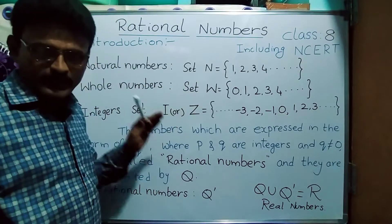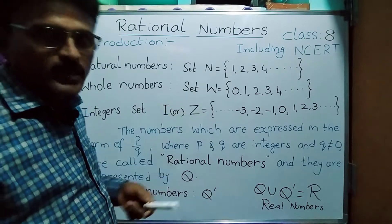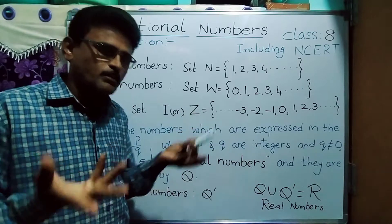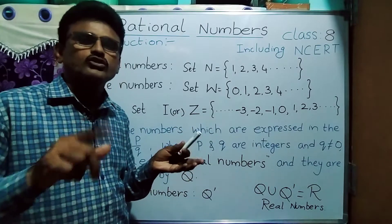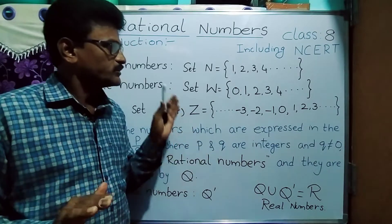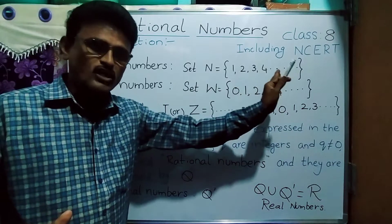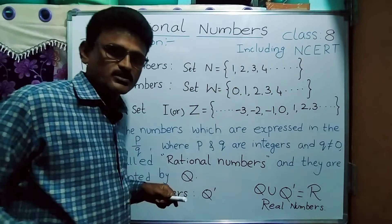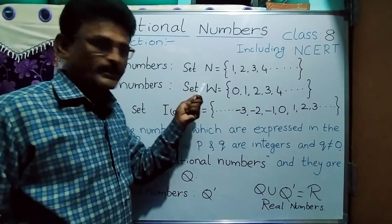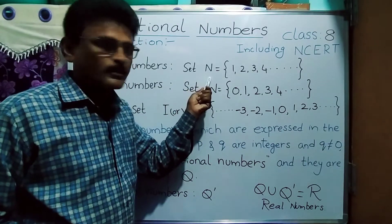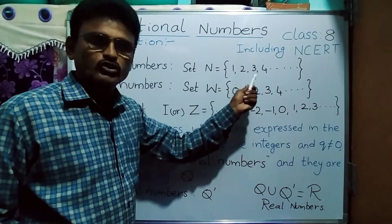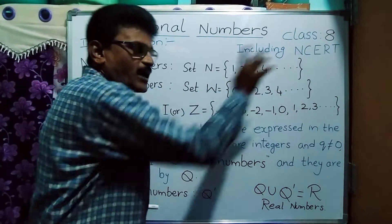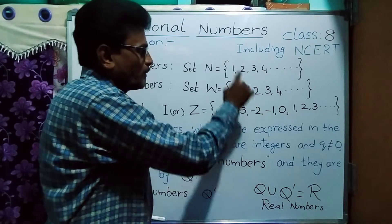What are natural numbers? Naturally, for counting purposes, the numbers we are using — 1, 2, 3, 4, 5, and so on — those numbers used for counting are said to be natural numbers. The natural number set is denoted by capital N. They start from 1, 2, 3, 4, 5, and there is no ending number, but the beginning number is 1.